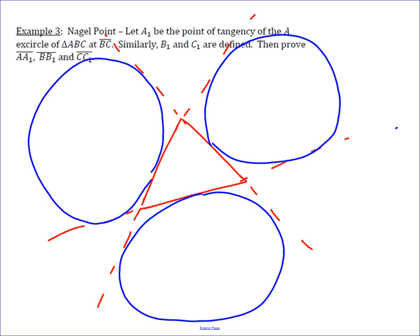Those are the three excircles. What this is concerned with is: if we call the triangle's vertices A, B, and C, and call the tangent points opposite them A1, B1, and C1, then these cevians, when drawn in, are concurrent.